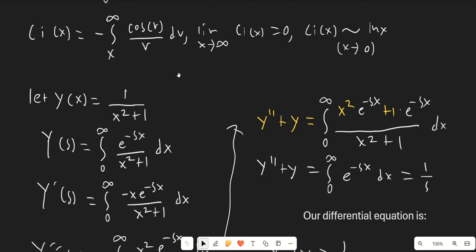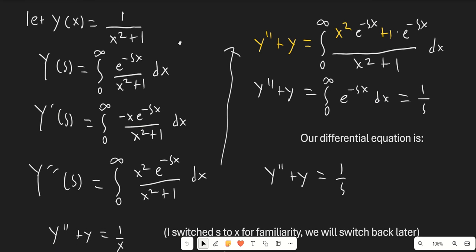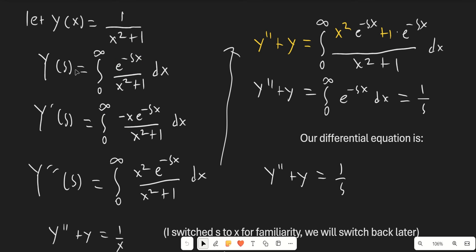So let's jump right into it. Our function y(x) is 1 over x squared plus 1. You could also say y(t), since that's normally more typical when using the Laplace transform, but I'm preferring to use x for right now. So our function Y(s), which is what we're actually solving for, is the integral from 0 to infinity of e to the negative sx over x squared plus 1 dx.